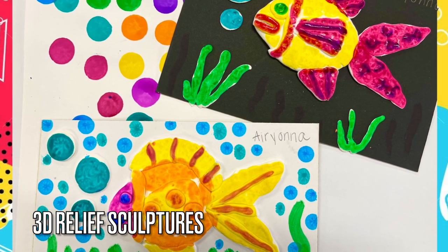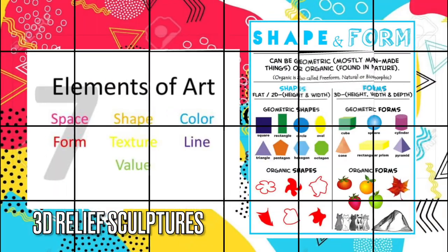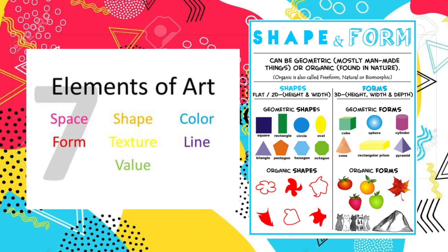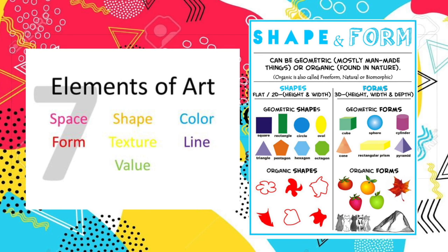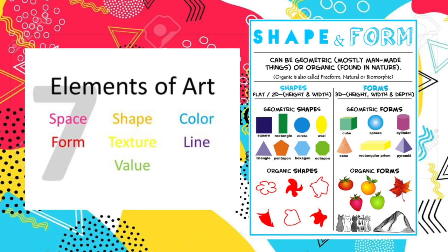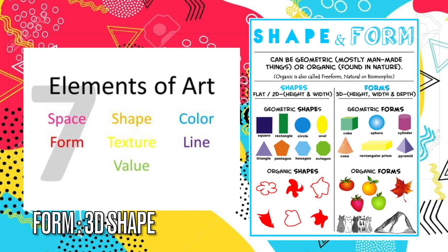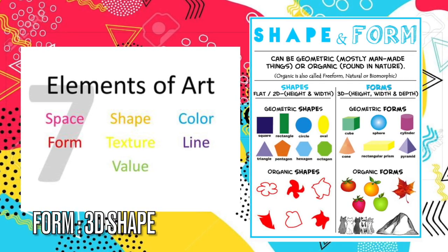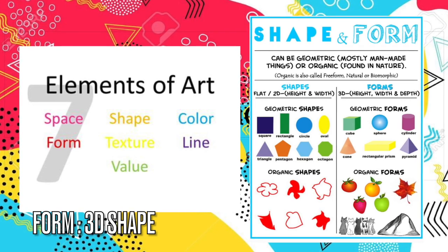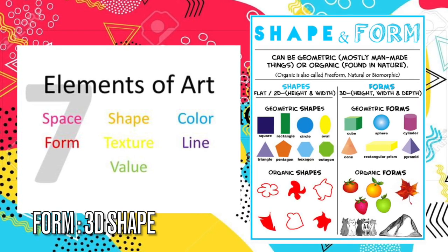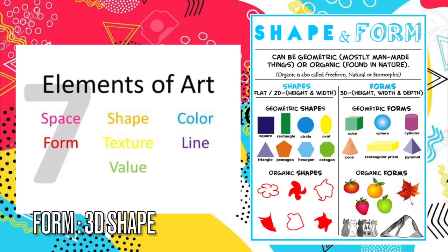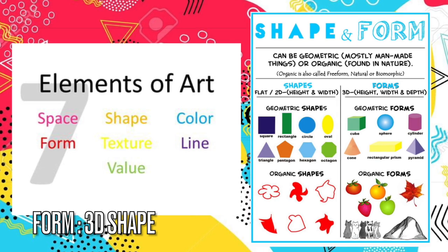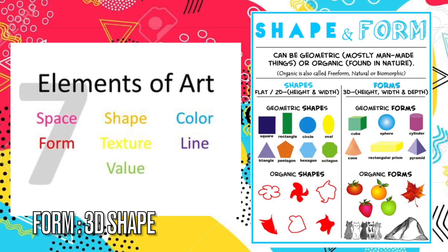Let's dive in. We know that art is made up of seven main elements. These are the ingredients that we use to create all artwork. Form is one of the elements of art along with line, shape, color, texture, value, and space.